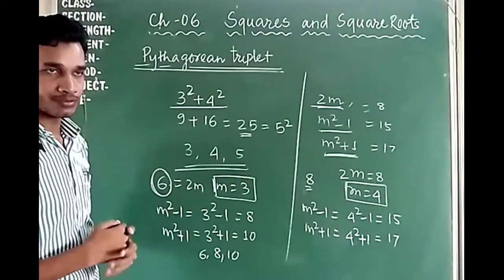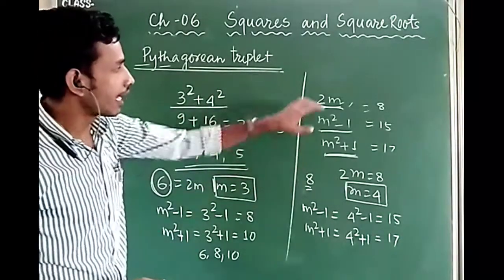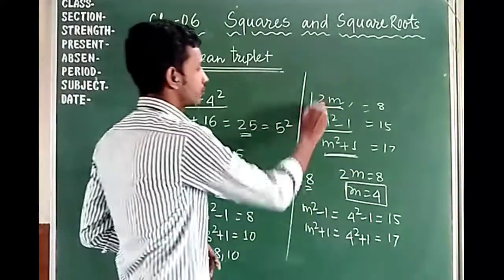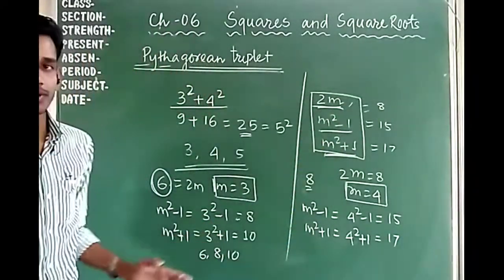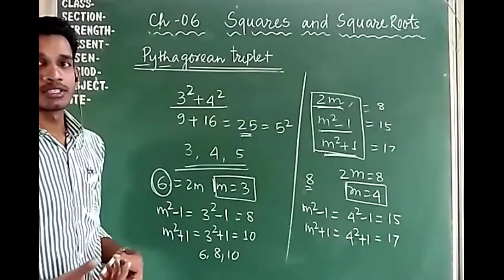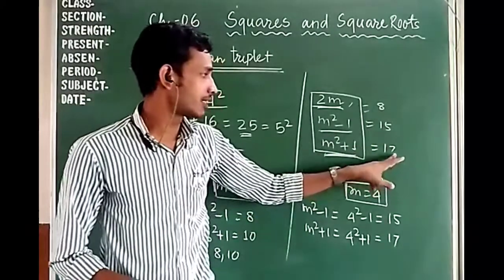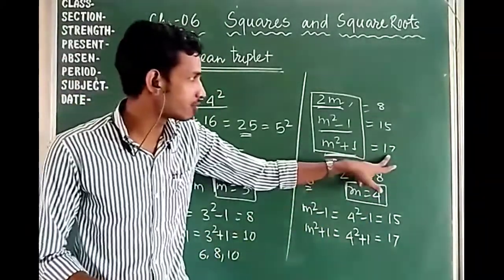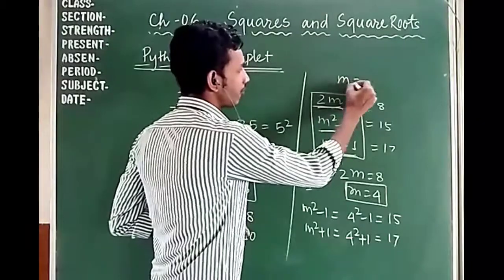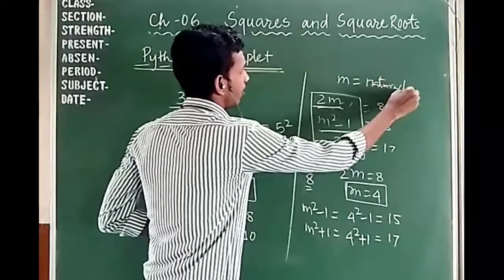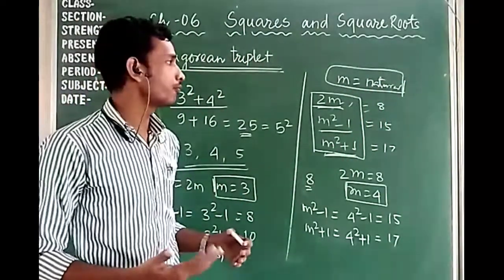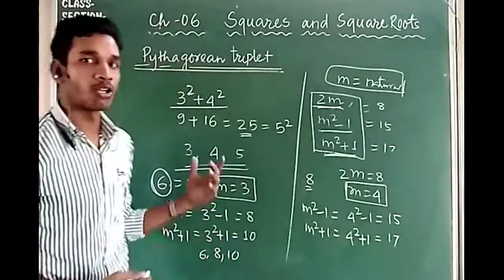The three numbers forming a Pythagorean triplet are given by the formula 2m, m squared minus 1, and m squared plus 1. If any one number of the Pythagorean triplet is given, we can find the other two. The value of m will always be a natural number. I hope these formulas are clear to everyone. Thank you.